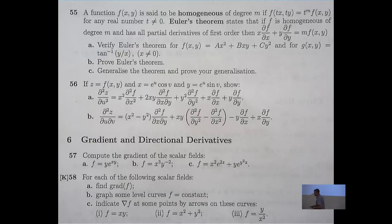So suppose you've got this function of two variables. Calculate the gradient of f. Graph some level curves f equals a constant. And indicate grad f at some points on the level curve. So this is a good question, because it tests a couple of things associated with the gradient.